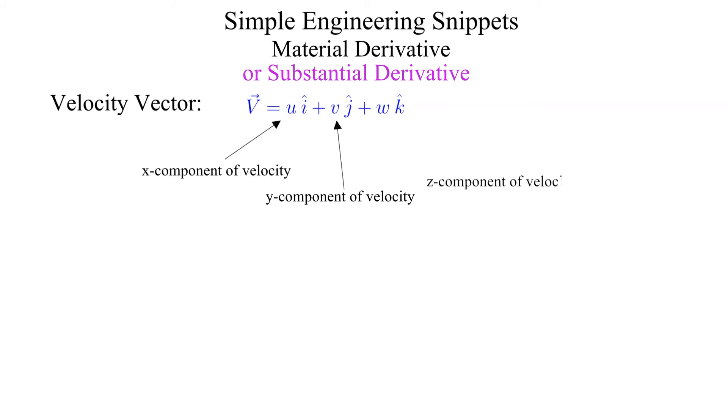The material derivative, also known as the substantial derivative, provides a time rate of change for a scalar or vector for a given particle in a flow field. Let's define some terms starting with the velocity vector. We'll use cartesian coordinates. The velocity vector is broken down into three directions x, y, and z as shown.